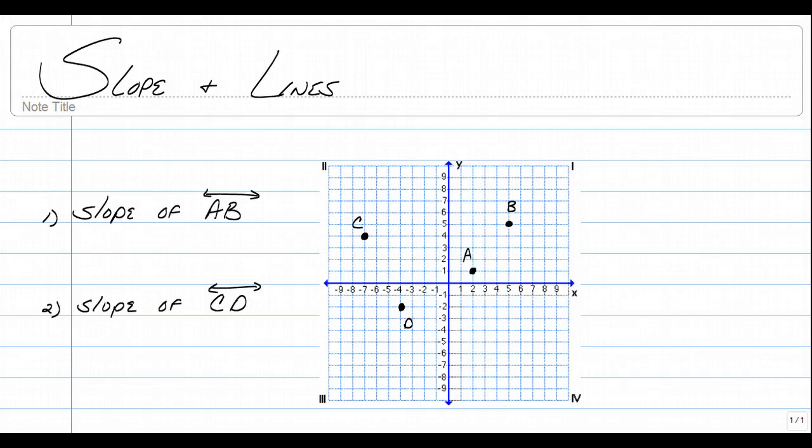All right, here we go. This is Mr. Longo with a video on slope and lines in a coordinate plane. The first thing we need to be able to do is calculate the slope of a line when you just have the coordinate plane. Of course, you can copy the coordinates down and find it algebraically if you'd like to, but it's much easier to just learn how to count to find slope.